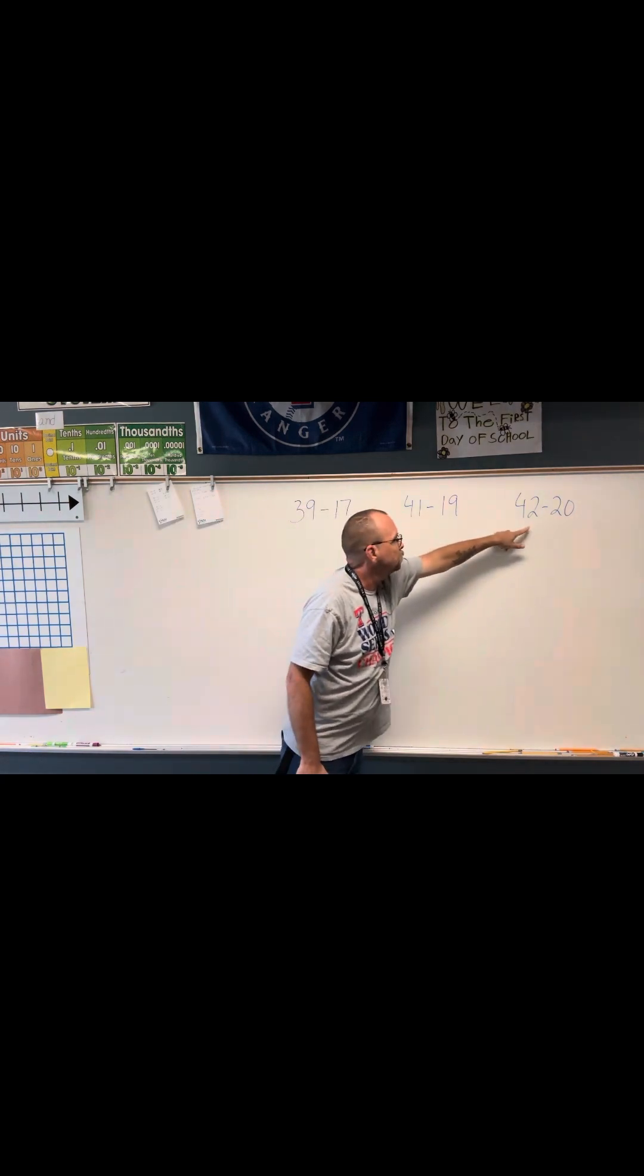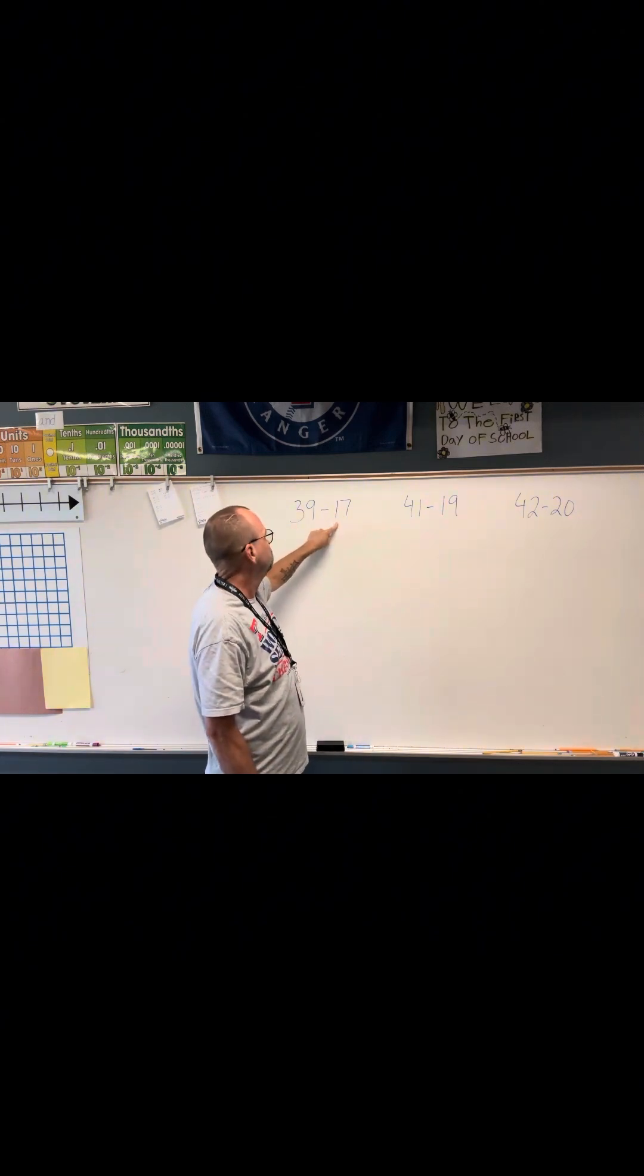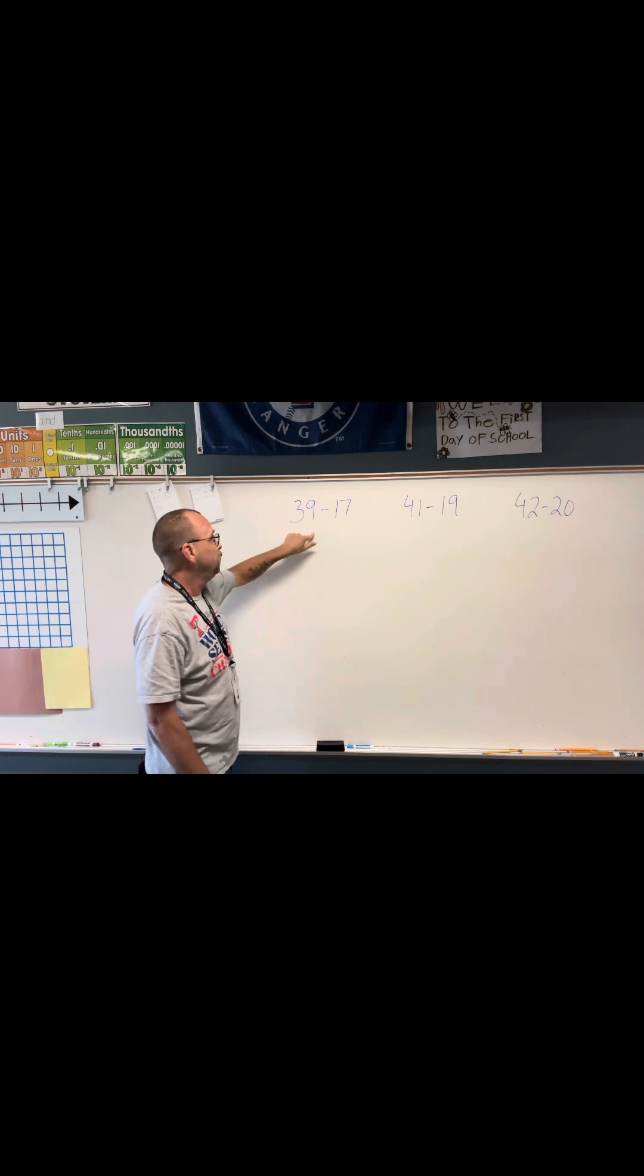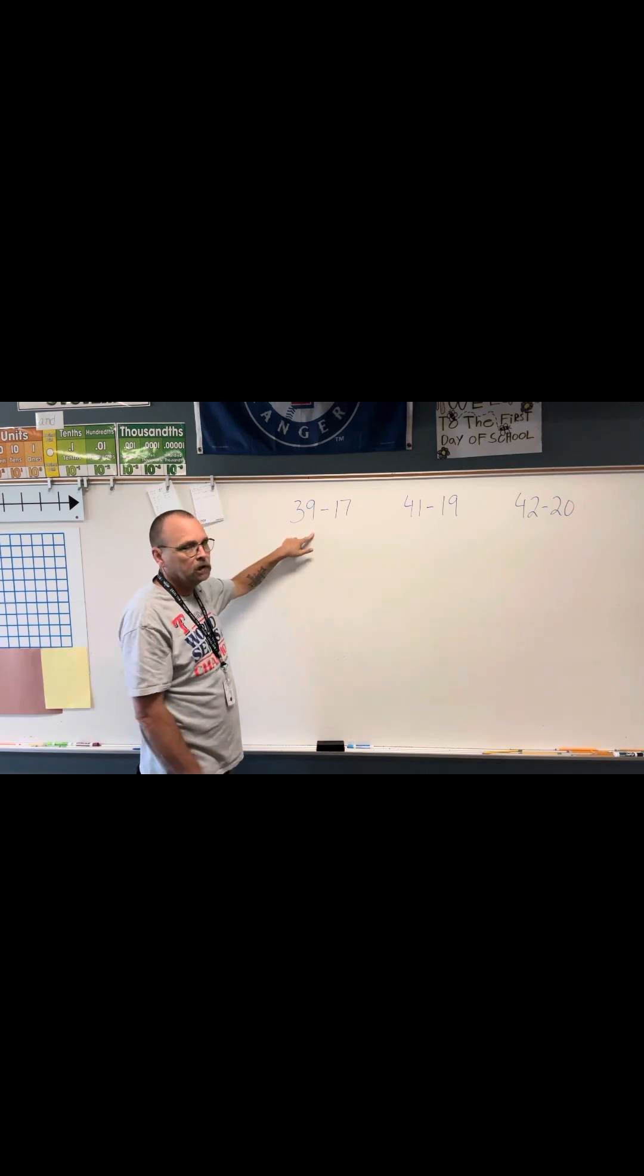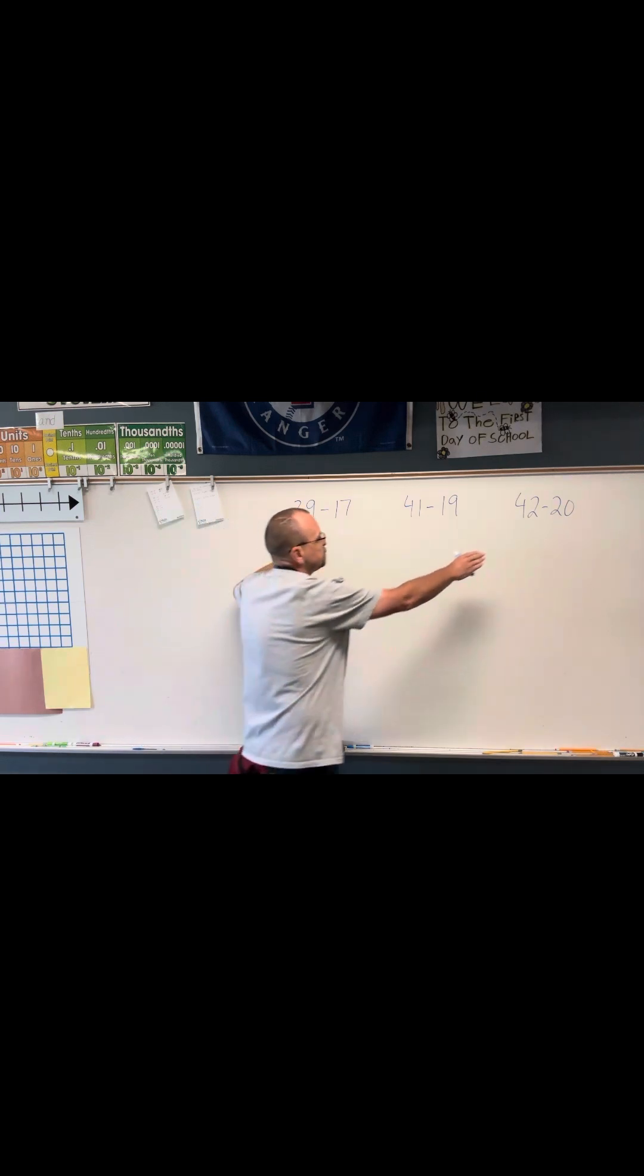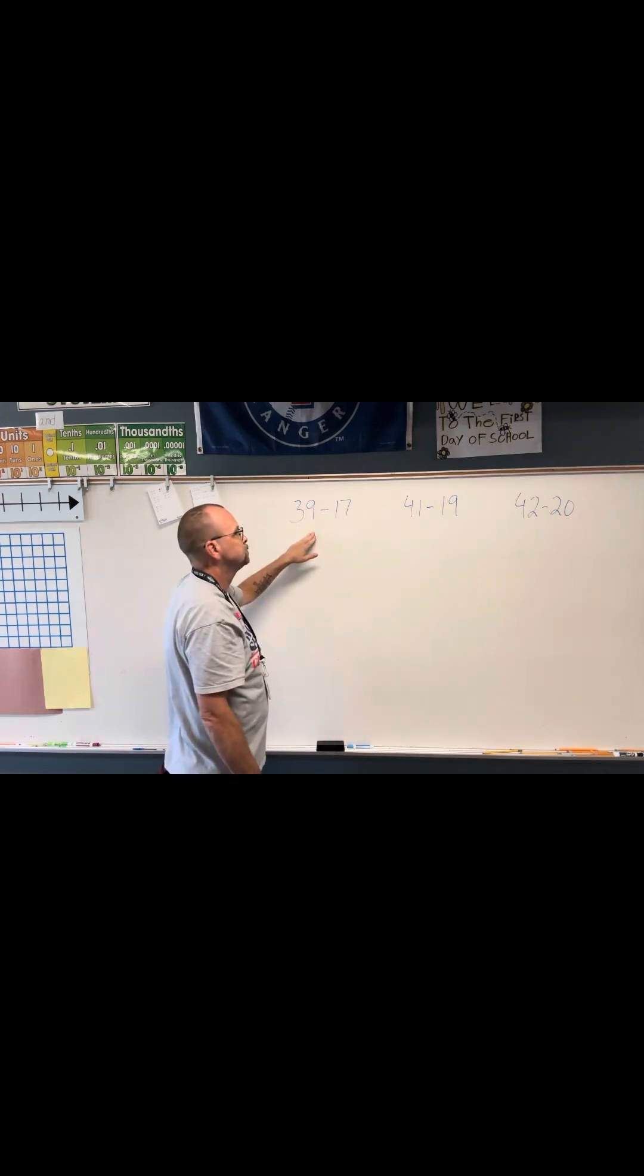So what I did is, if I added 3 to 17, that would give me 20. If I added 3 to 39, that's going to give me 42. So these are the same difference, the same difference.